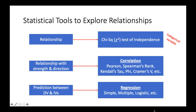In SPSS there are a lot of statistical tools that allow you to explore relationships. One of them is the chi-square test of independence. We also have correlations such as the Pearson correlation test and its non-parametric counterparts such as Spearman's rank, Kendall's tau, Cramér's V, and much more. We also have the ever-famous regression analysis.